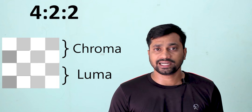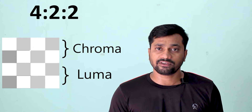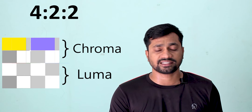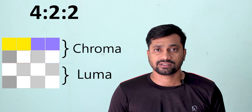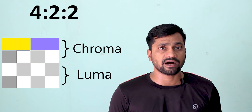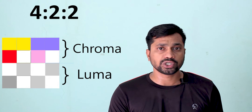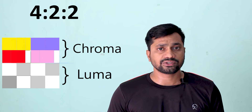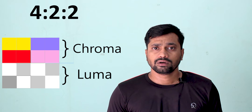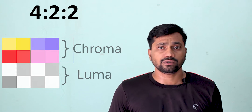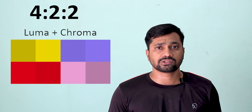In 4:2:2, the second number two means only two individual pixel blocks exist in the first row — only two unique colors placed across four pixel blocks. The remaining two pixel blocks share colors with their neighbors, so they combine to form only two unique blocks. The third number is also two, meaning the second row also has only two unique colors. So in 4:2:2 we have four unique pixel color blocks compared to eight in 4:4:4 — a modification has occurred, making this lossy compression where some pixel colors are lost.